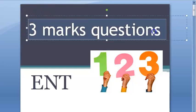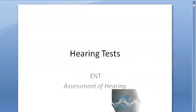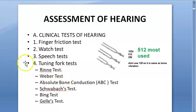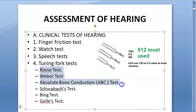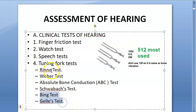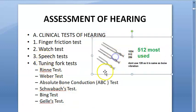Let us look at some three-mark questions in ENT. The next question they have asked is the tuning fork tests. When they ask about tuning fork tests, you will write all the tests: Rinne's test, Weber's test, Absolute Bone Conduction test, Schwabach test, Bing's test, and Gelle's test.